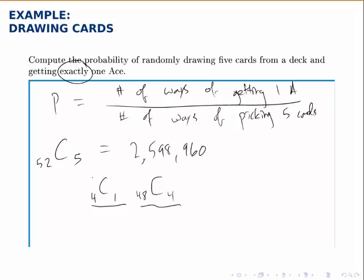So there are 4C1 ways of picking an ace and there are 48C4 ways of picking four cards that are all not aces. So if we multiply these two together, we'll have the number of ways of selecting one ace and four non-aces or the number of ways of selecting exactly one ace.